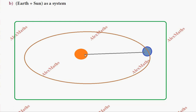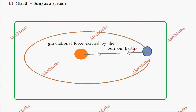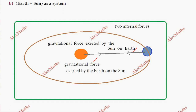The gravitational force exerted by the sun on the earth, and the gravitational force exerted by the earth on the sun — these are two internal forces when we consider earth and sun together as a system.